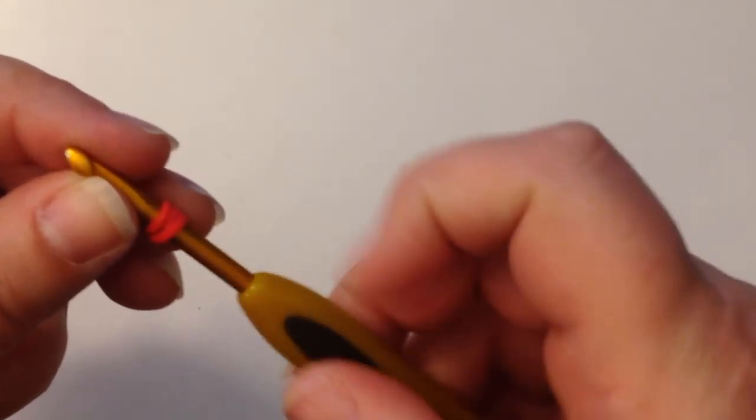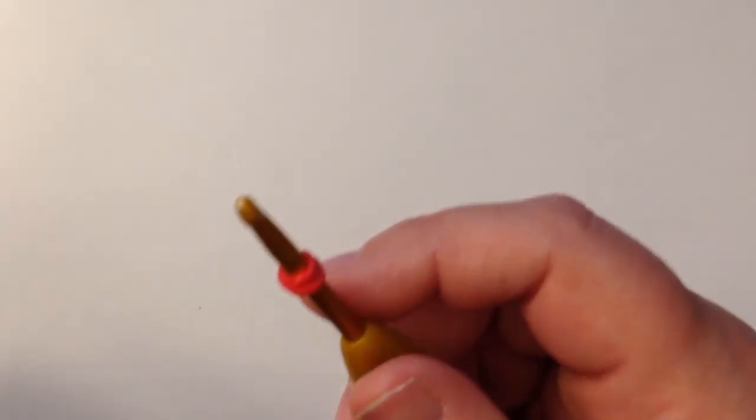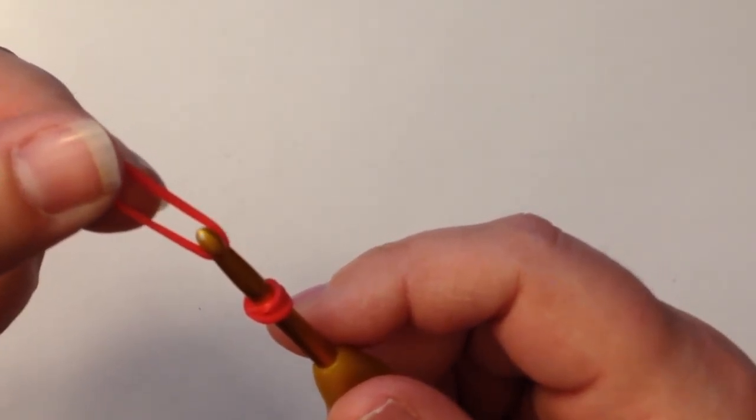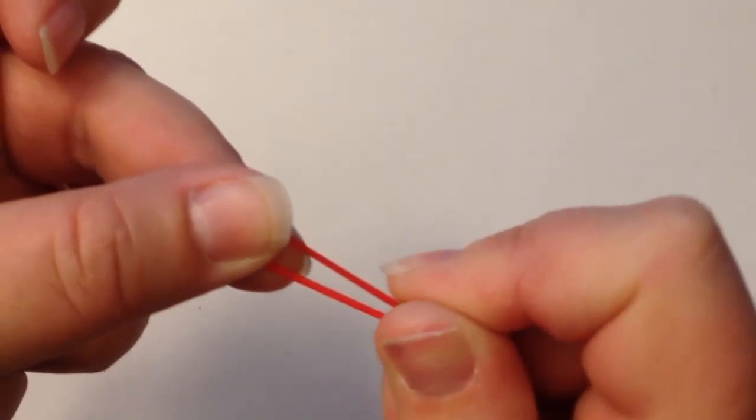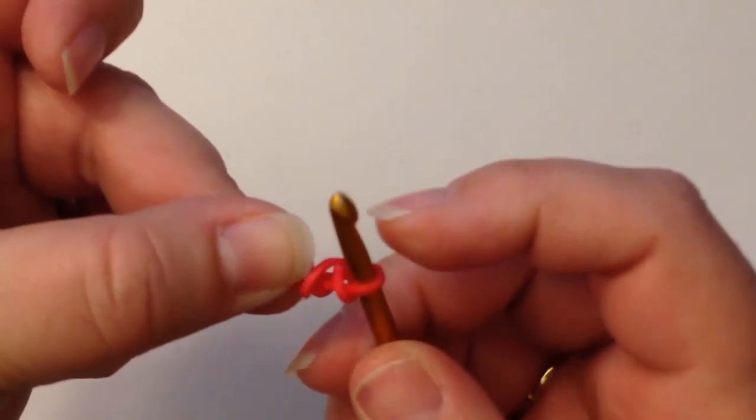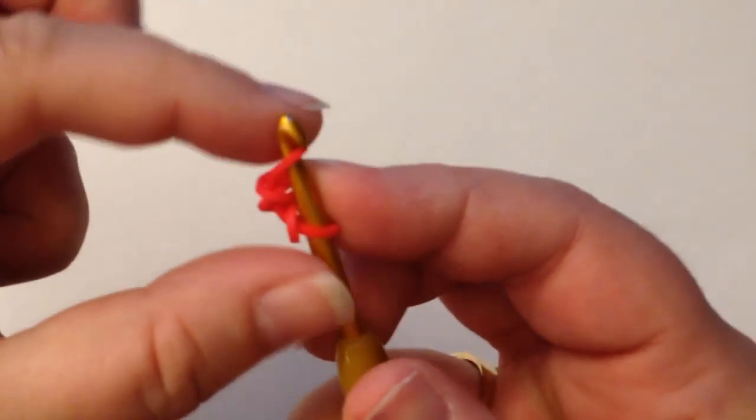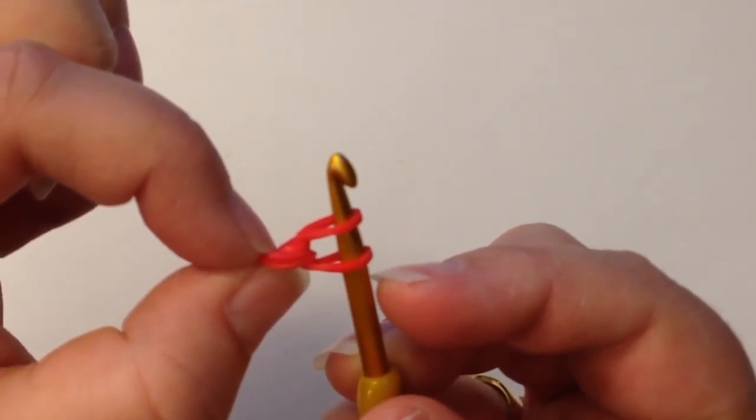This is the same as we do with our normal looming. You take a single band and pop it on the end of your hook, and then move the end cap over, push your band down, and reclaim the end of it on your hook so that you have it like that.